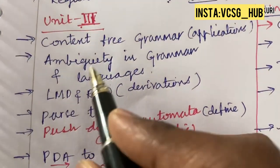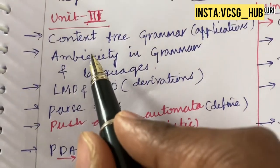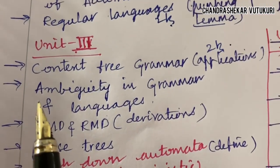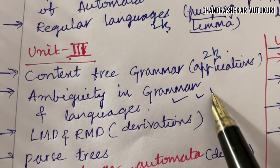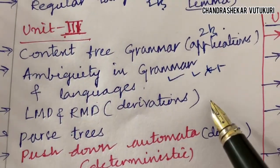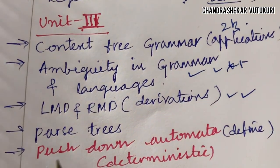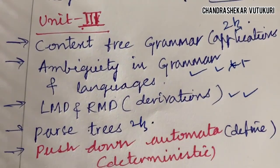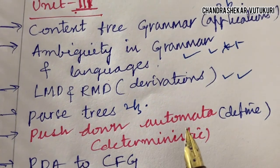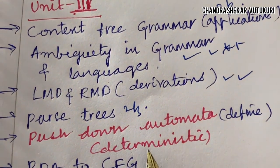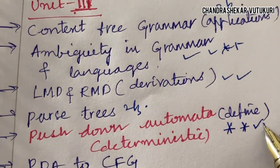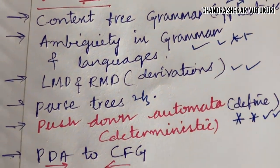Moving to Unit 3 — context-free grammar and its applications may be a 2 or 3 mark question. Ambiguity in grammar and language may be a long question, and leftmost derivation (LMD), rightmost derivation (RMD), and their derivations are topmost questions. Defining the term parse tree may be a 2 or 3 mark question. Push-down automata, deterministic PDA, and defining the term may be a 2 or 3 mark question.